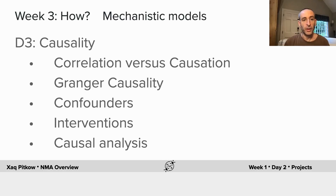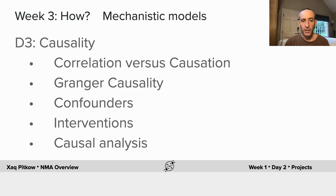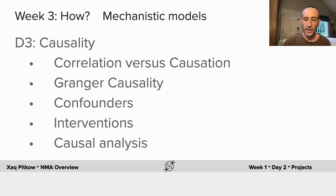On day three, we'll talk about causality and contrast correlation with causation. There's a common tool called Granger causality used to approximate causality in time series — you'll learn about that. In causal analysis, you'll learn about confounders, interventions, and instrumental variables. These are ways to assess whether two signals are related causally or merely correlationally. This is a good tool, but you'll want to learn about it before applying it, as it comes at the end of the course.